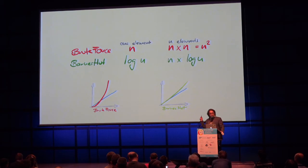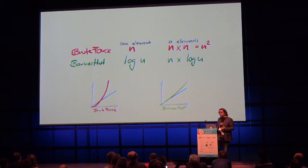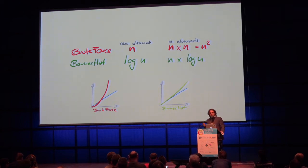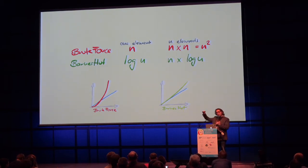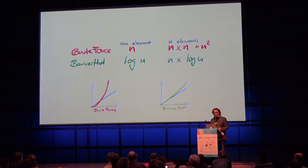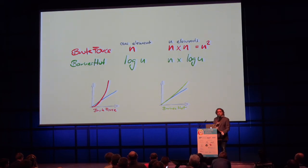In the brute force method, for each body you go through all other bodies, giving n times n = n-squared complexity. Barnes and Hutt proved that with their cutoff function you will always go approximately log n steps deep into the tree before stopping, and that the error introduced is very negligible. This gives us n times log n complexity — exactly what we were hoping for.